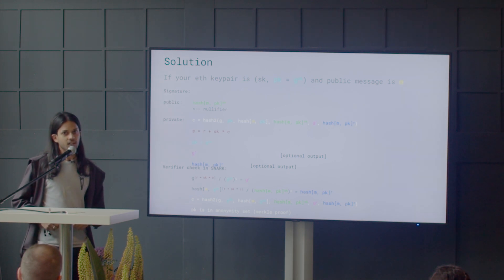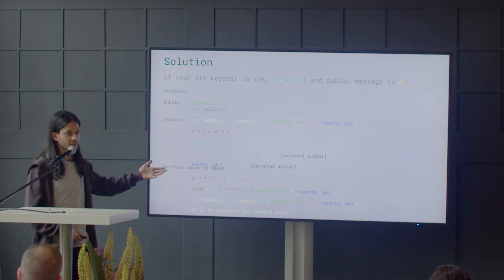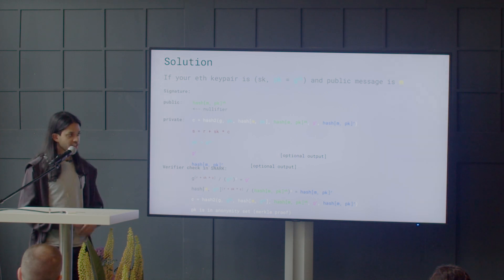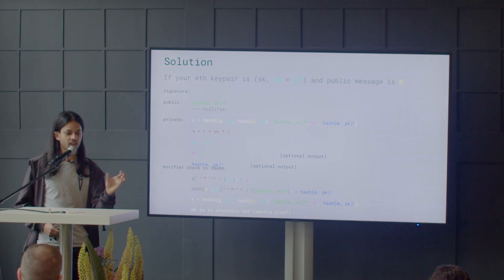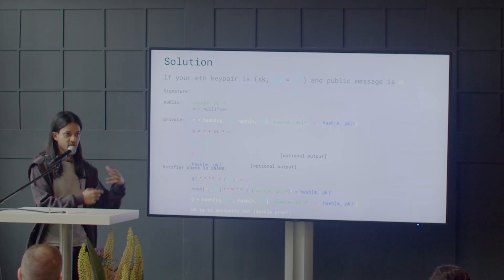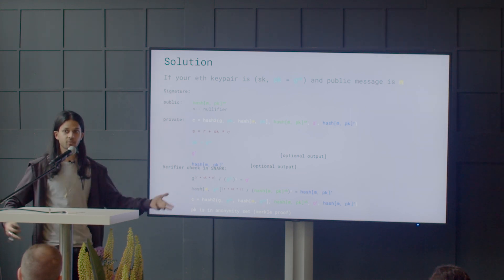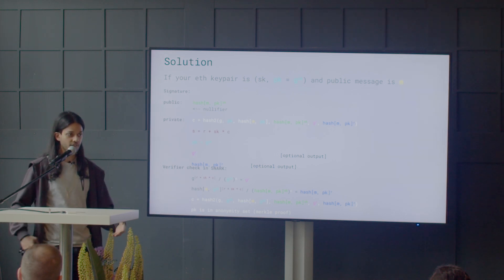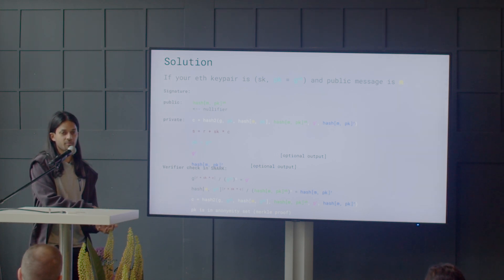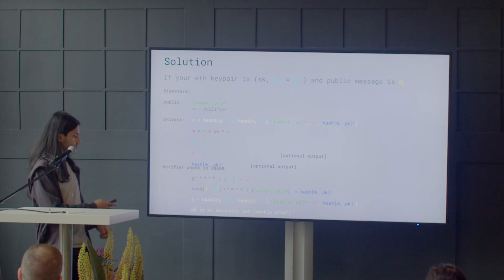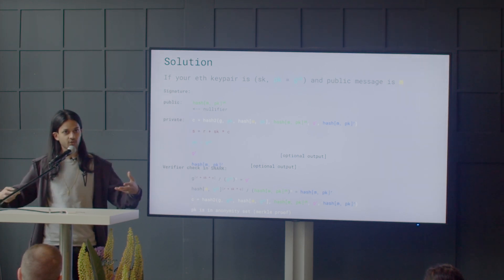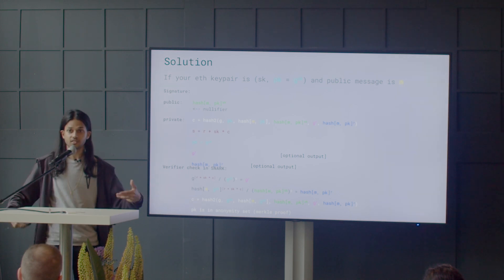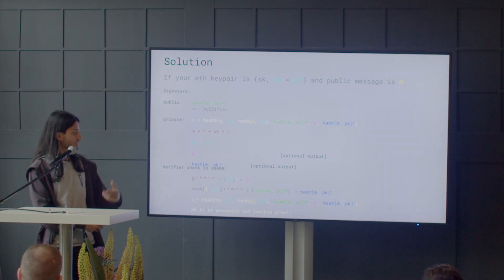Why can't we just use a pairing to verify that the discrete log was calculated correctly? The issue is that pairings only work on curves in which DDH is easy. secp256k1, which is the curve Bitcoin and Ethereum use, doesn't support pairings on the native curve itself because DDH is hard. This alludes to why we need a new signature scheme instead of using existing schemes already in practice.